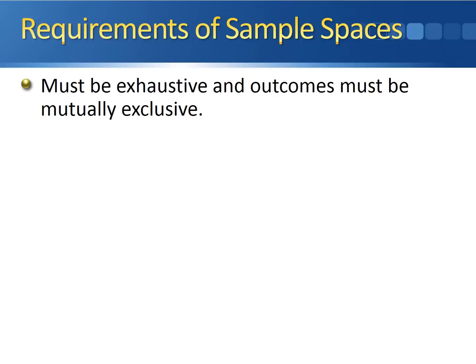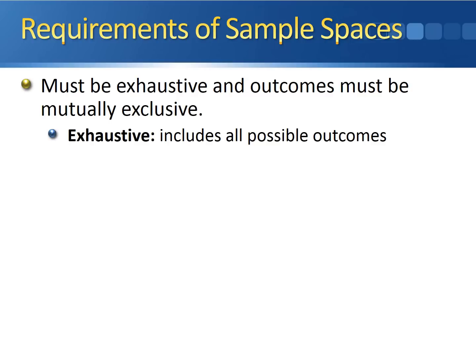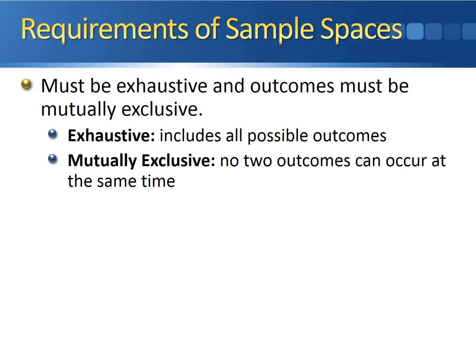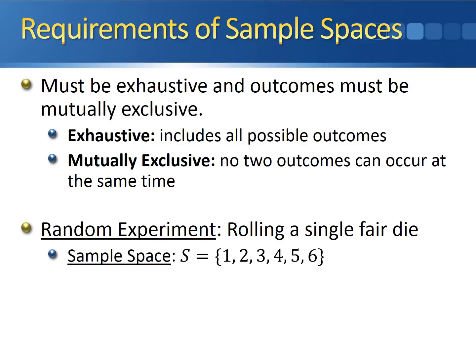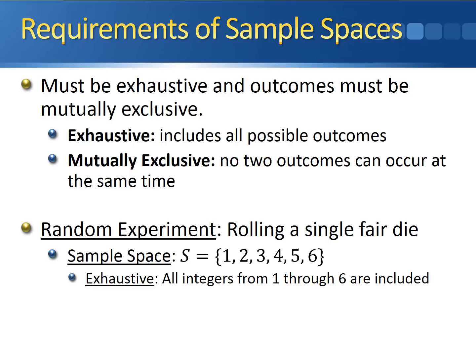There are two requirements that sample spaces must follow: sample spaces must be both exhaustive, and the outcomes must be mutually exclusive. Exhaustive means that the sample space must include all possible outcomes of the random experiment. Mutually exclusive means that no two outcomes can occur at the same time. Going back to our example of rolling a single fair die, we have our sample space of the integers one through six, and we can show why this sample space is exhaustive and mutually exclusive. It's exhaustive because all of the integers from one through six are included.